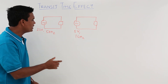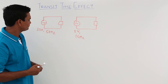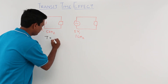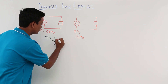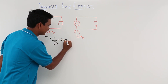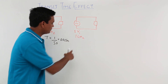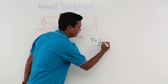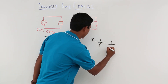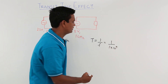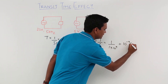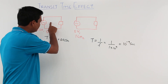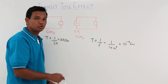Let us understand why we are so concerned about frequency here. When the frequency is 50 Hz, the time period is 1/50, which comes out to be 0.02 seconds. When the frequency is 1 gigahertz, the time period is 1/f, which is 1/(1×10⁹), coming out to be 10⁻⁹ seconds. So one cycle at 50 Hz is completed in 0.02 seconds.